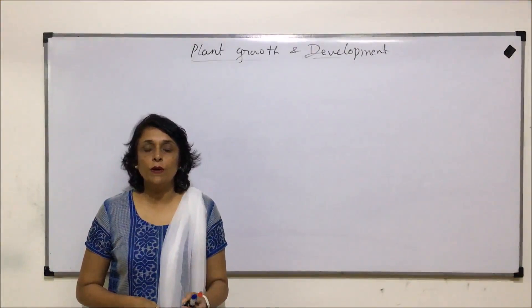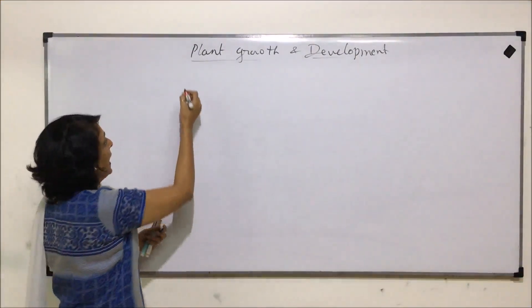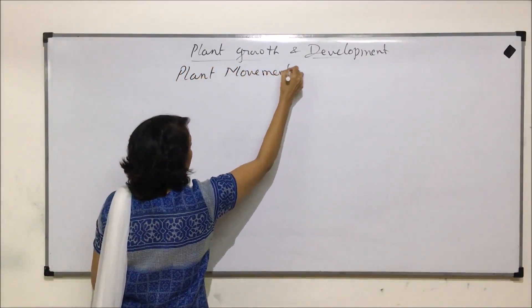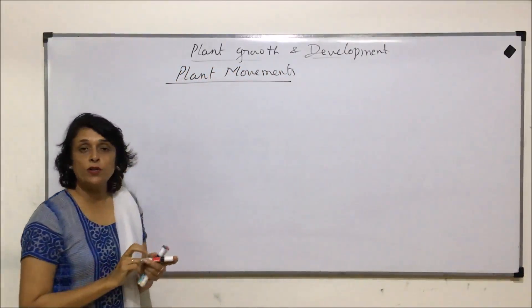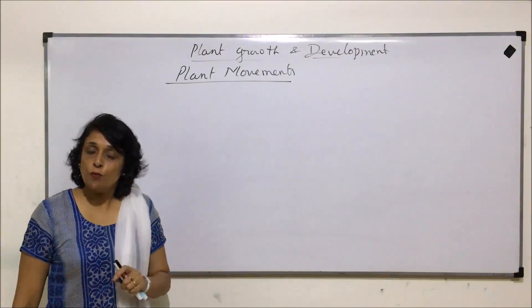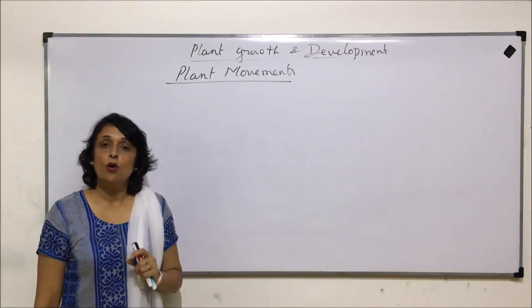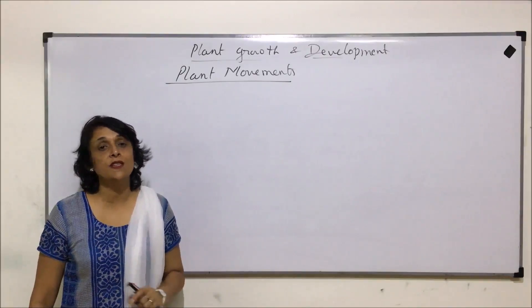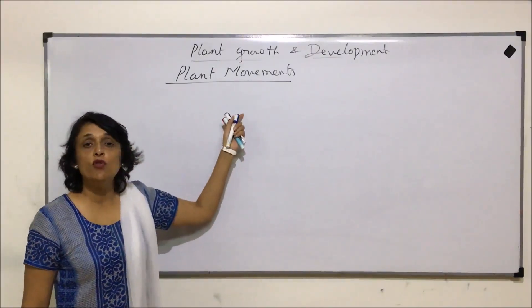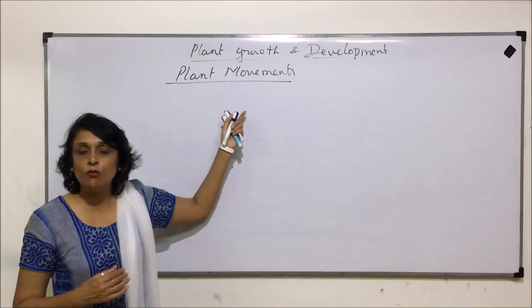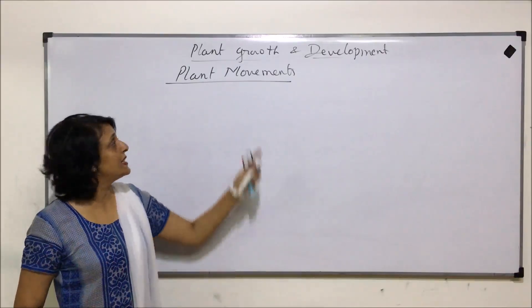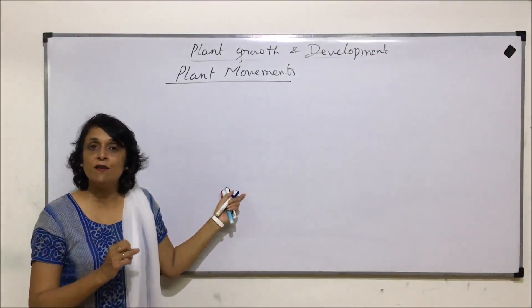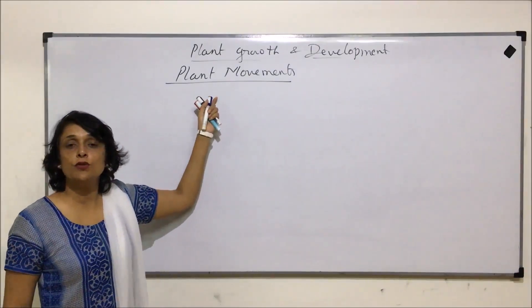In this video, we will talk about plant movements. This is a very important aspect of plants because plants show movement but they don't show locomotion. Locomotion is when the organism moves from one place to another, which is a characteristic feature of animals. Movement means when the leaves move up and down or the petals open up — even opening and closing of stomata is considered a type of movement.